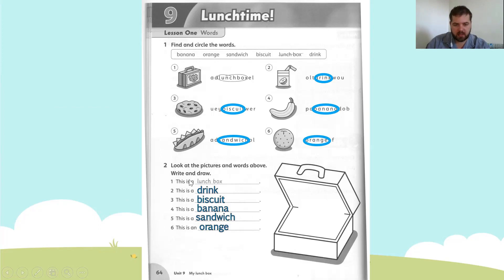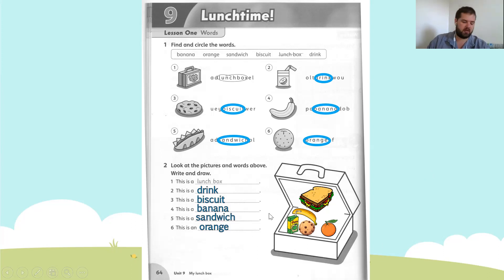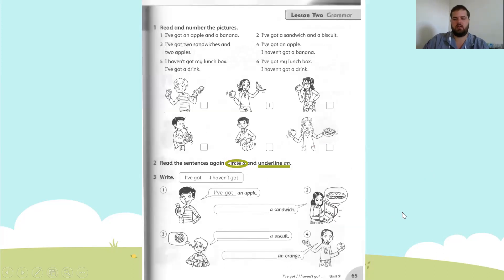Once you are finished writing all five words, we need to draw a picture. I want you to draw a picture of a drink, biscuit, an orange, a banana, and a sandwich. Pause the video if you're not finished, because next we're going to go to page 65, and drawing the picture is going to take a while.